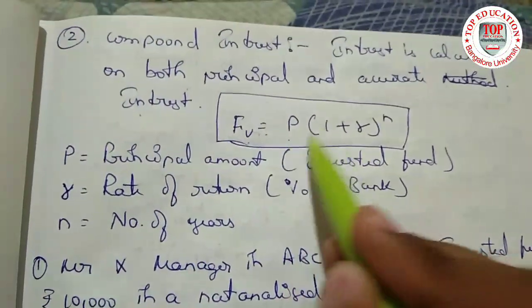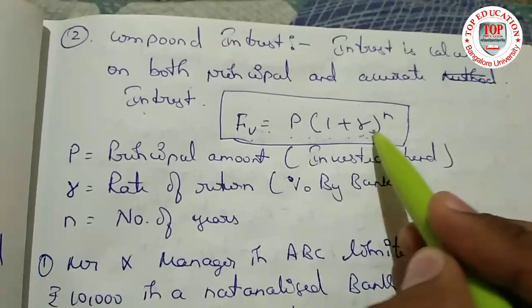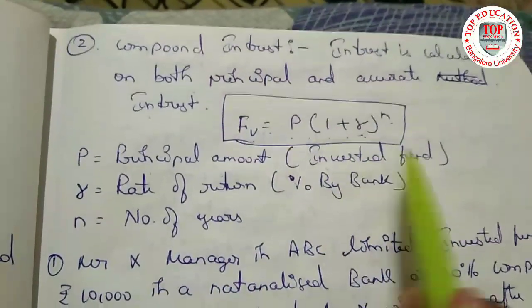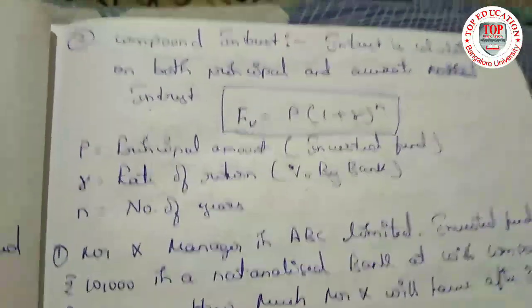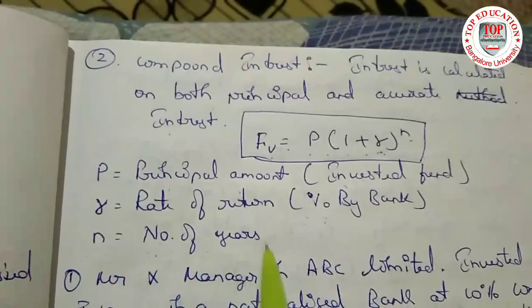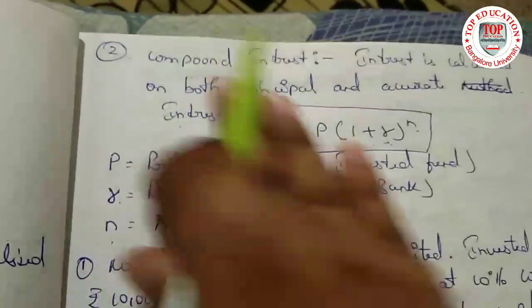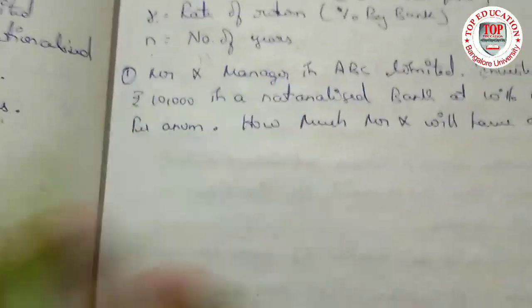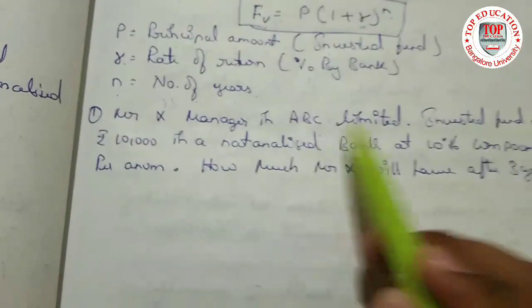Future value is equal to P — principal amount — multiplied by bracket one plus r, rate of interest, divided by n — number of years — raised to the power n. P is the principal amount, the invested fund. R is the rate of return percentage given by the bank. N is the number of years.